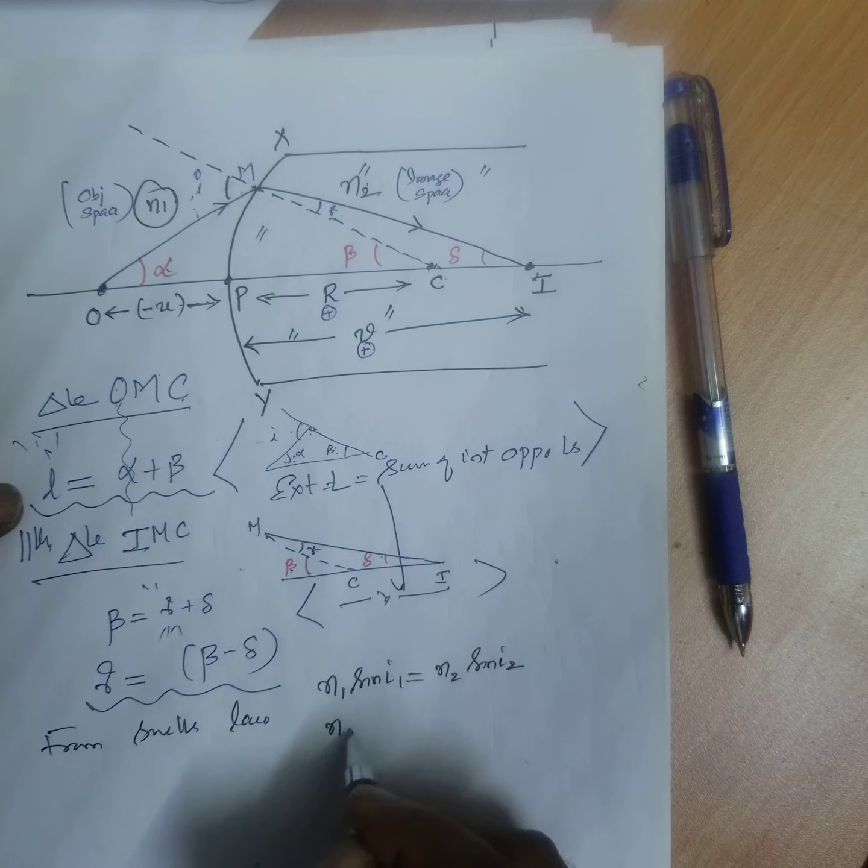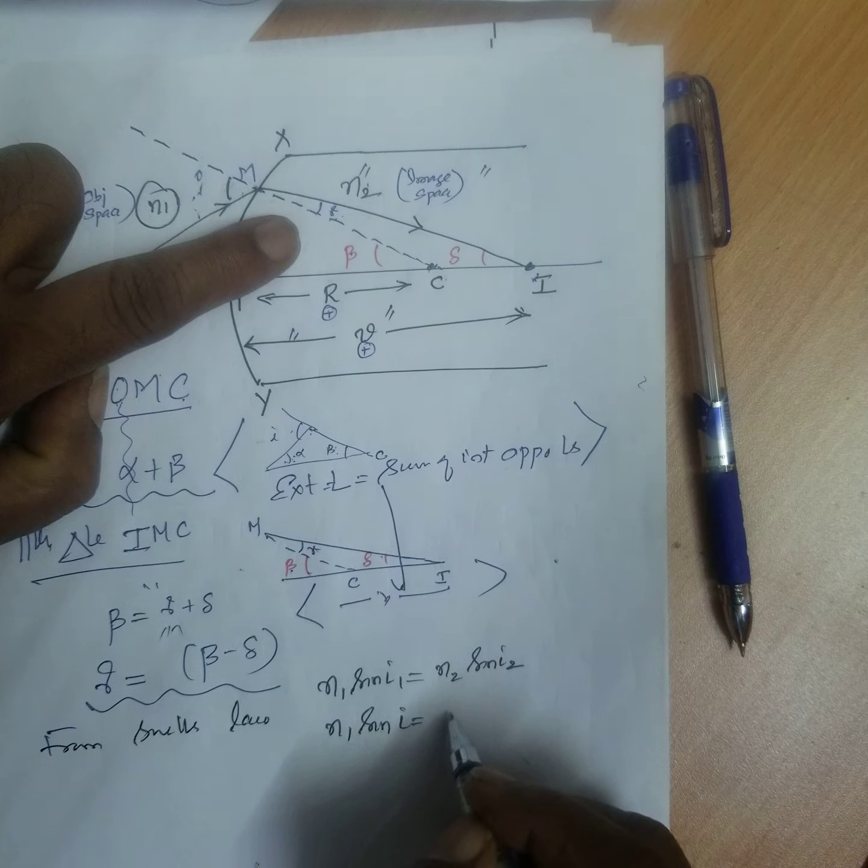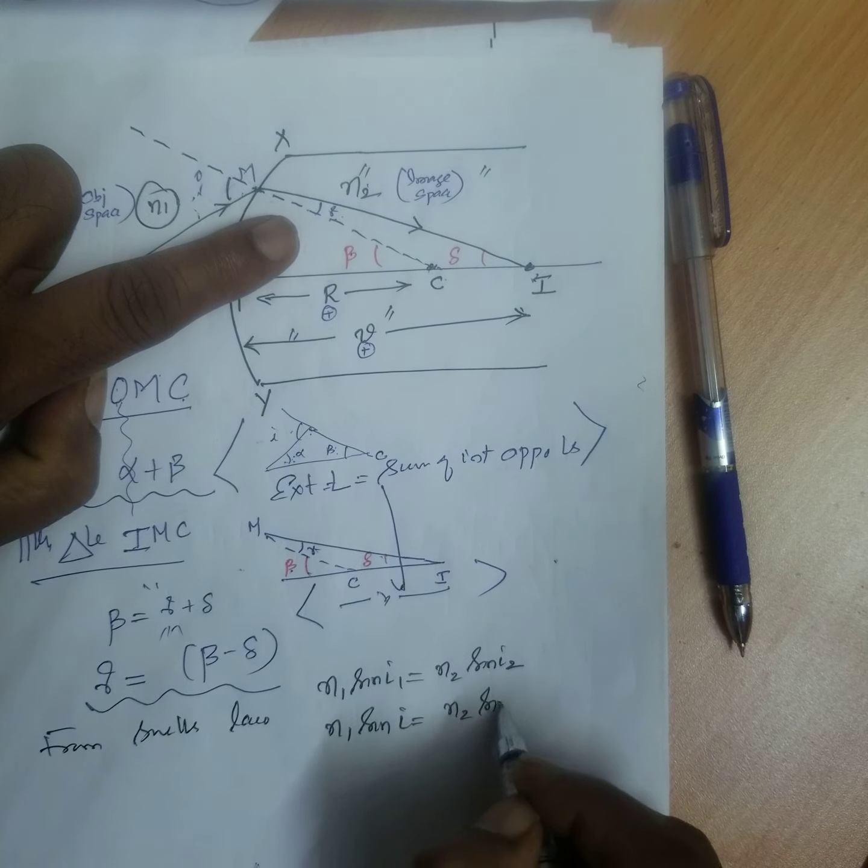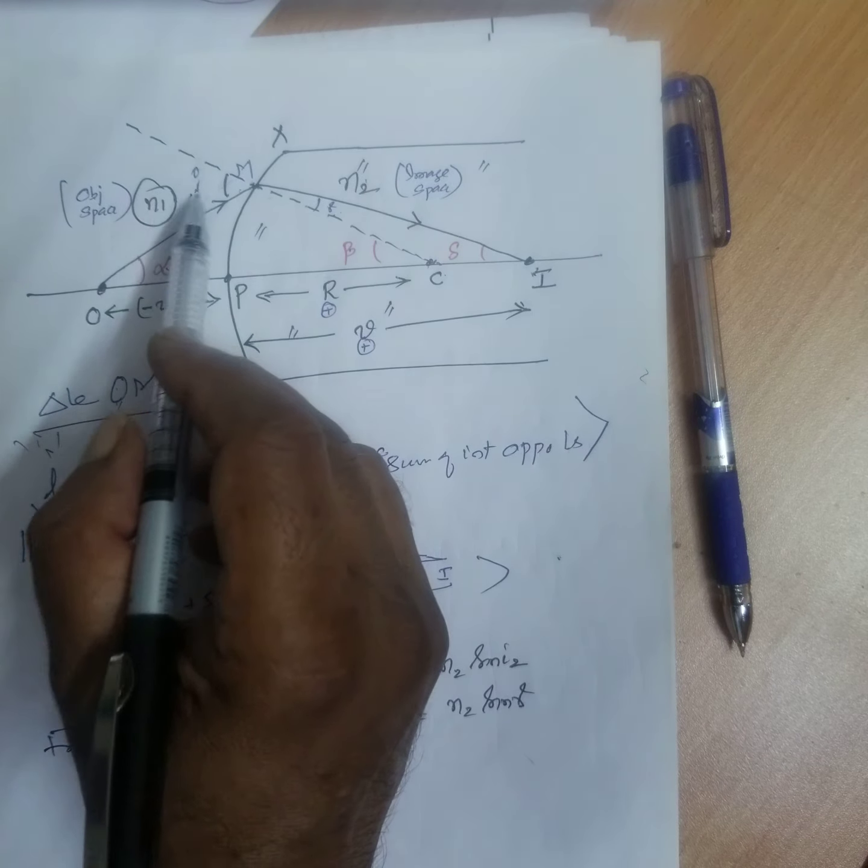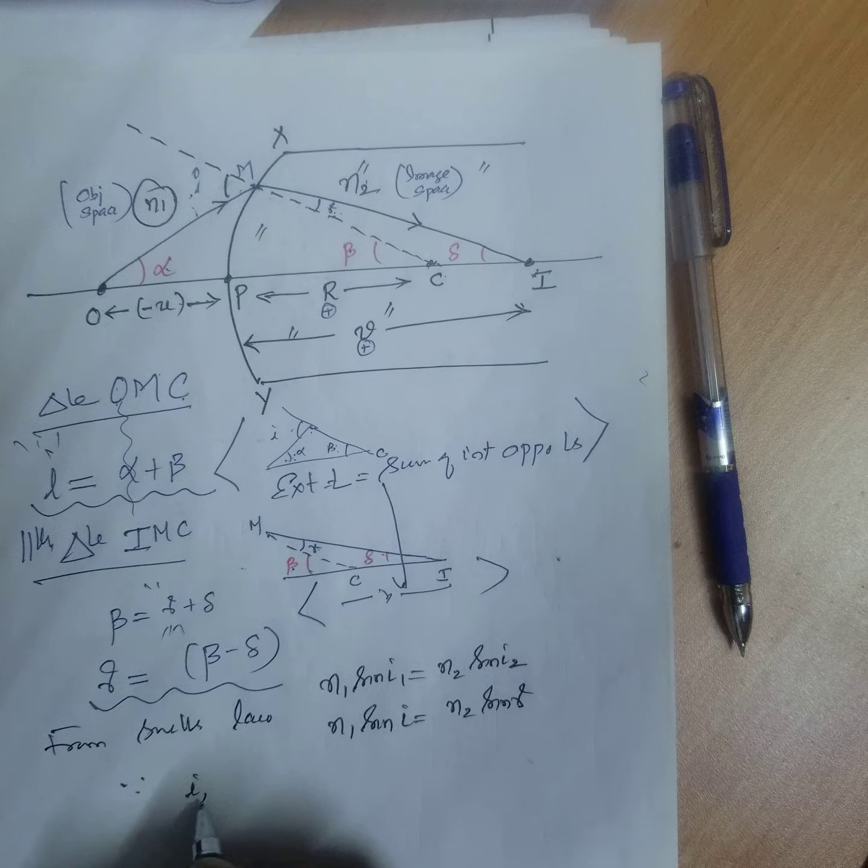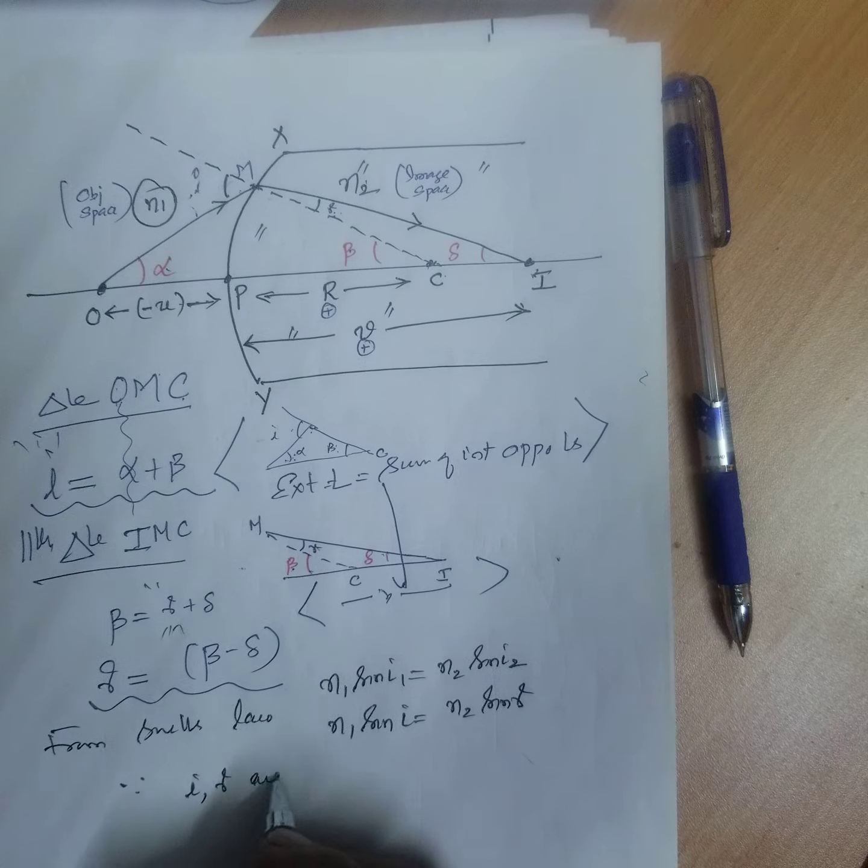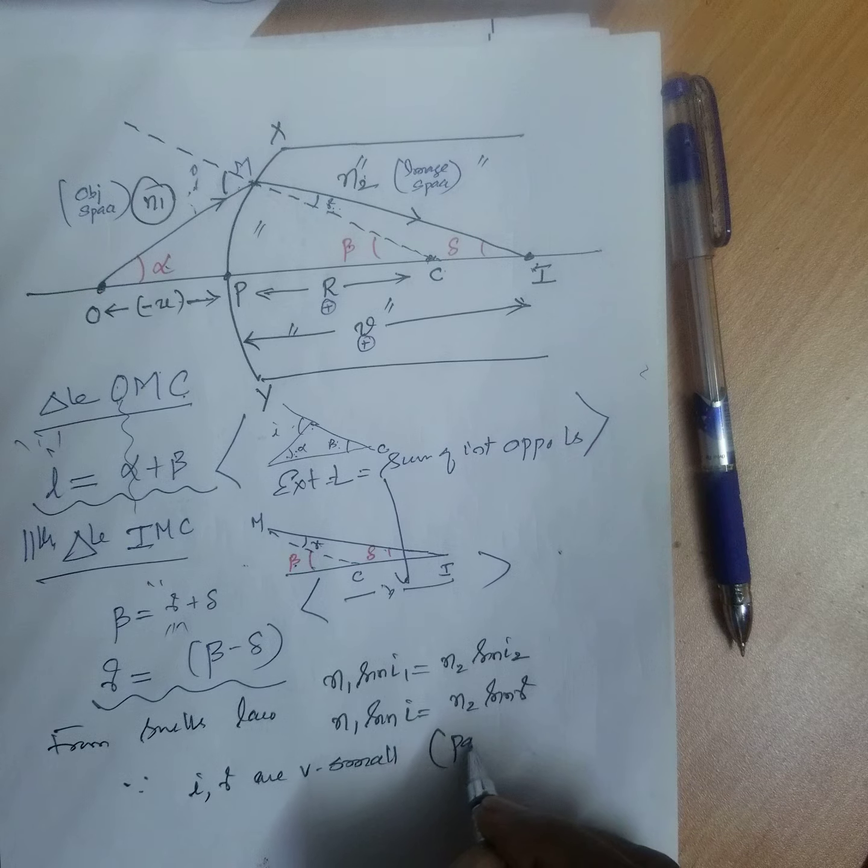Therefore, N1 sin I1 is equal to I, N2 sin R. Can you follow? Here I1 and I2. Since I and R are very small, you write for paraxial ray.